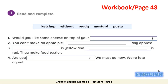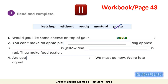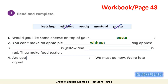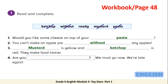Open your workbook page 48, exercise number 1. Here we have four sentences and you are going to complete them with the suitable words from the box. Let me help you with the first one: would you like some cheese on top of your pasta? Now stop the video and do the task. Let's see the answers. Number two: you can't make an apple pie without any apples. Number three: mustard is yellow and ketchup is red — they make food tastier. Number four: are you ready? We must go now, we are late again. Well done.